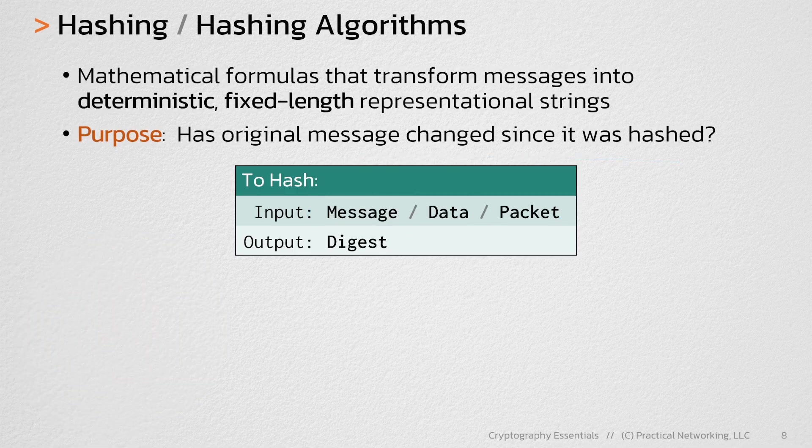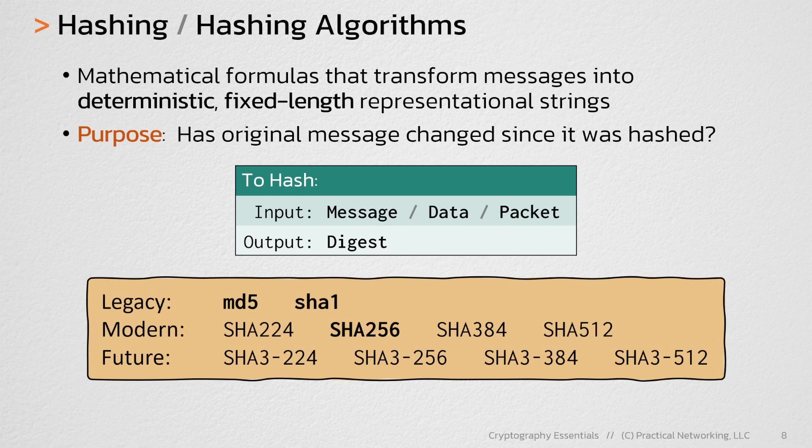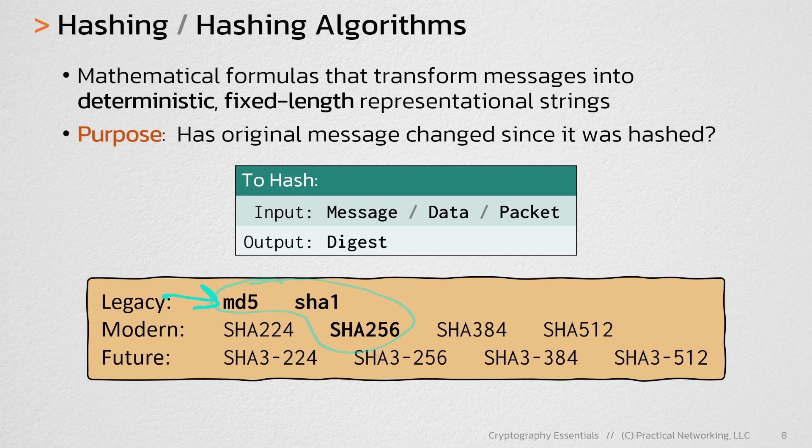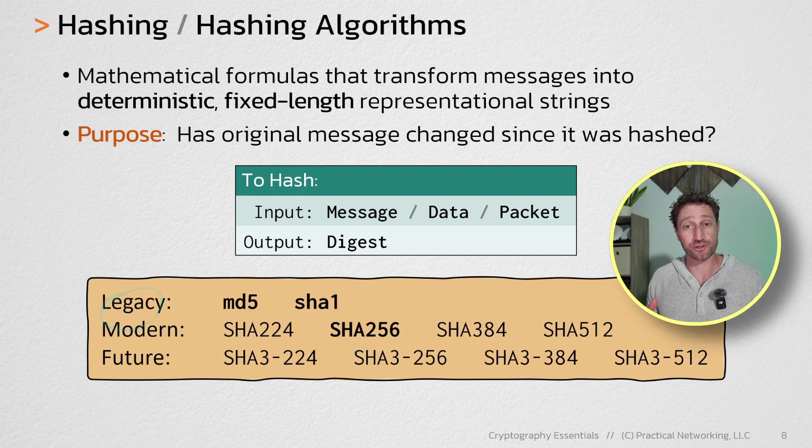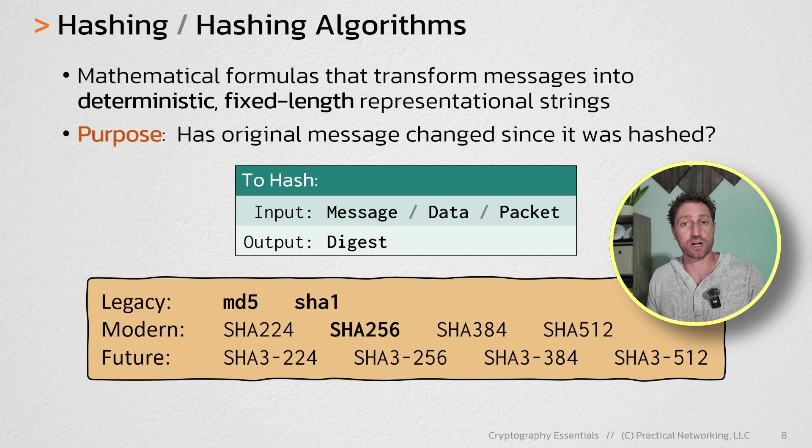And here are some common hashing algorithms you'll see. The most common ones are these over here in bold. These first two, MD5 and SHA, are considered legacy by the current world. Personally, I still use MD5 and SHA all the time to compare to see if two different files have changed. But if my goal is security, MD5 and SHA-1 are not approved for security in the modern age.